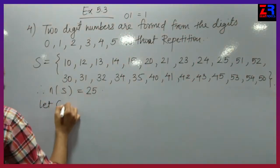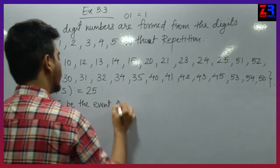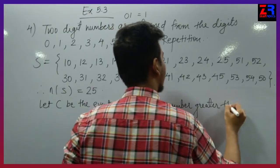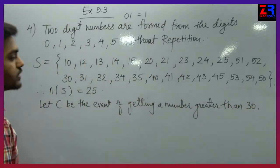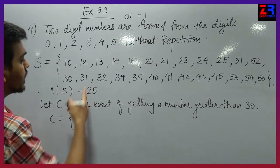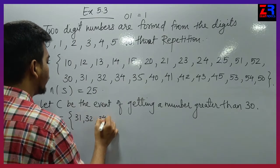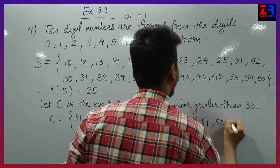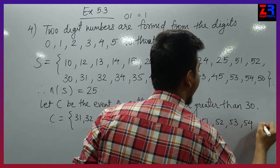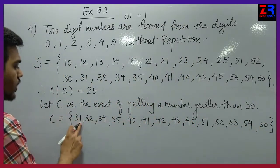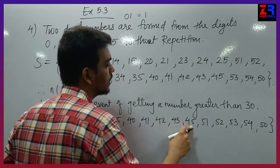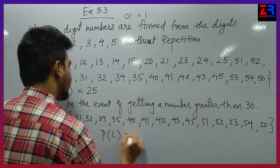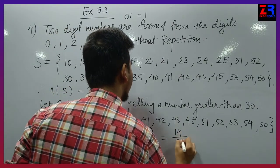Next condition: let C be the event of getting a number greater than 30. Numbers greater than 30 from the sample space: 31, 32, 34, 35, 40, 41, 42, 43, 45, 51, 52, 53, 54, 50. Counting them: N of C equals to 14. Probability of C equals to N of C upon N of S = 14 upon 25.